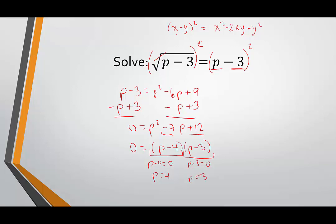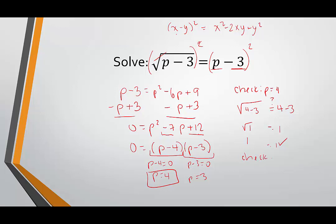Now we check both solutions. It's possible that both 4 and 3 are actual solutions and neither are extraneous, but we have to check anyway. Checking p equals 4: the square root of 4 minus 3 equals 4 minus 3? The square root of 1 is 1, and 4 minus 3 is 1 — so 1 equals 1, true. Checking p equals 3: the square root of 3 minus 3 equals 3 minus 3? The square root of 0 is 0, and 3 minus 3 is 0 — so 0 equals 0, true. Both solutions are valid: p equals 3 and p equals 4.